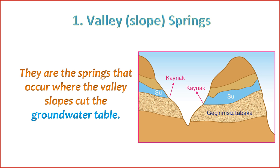10. Potential Vulnerabilities — valley slope springs can be vulnerable to changes in land use, deforestation, or alterations in the natural drainage patterns. Human activities in the surrounding areas may impact the recharge and flow of groundwater to these springs. Understanding the characteristics and dynamics of valley slope springs is essential for effective water resource management and conservation, especially in regions where these springs play a vital role in supporting both natural and human environments.